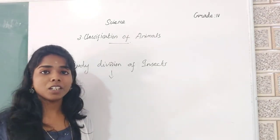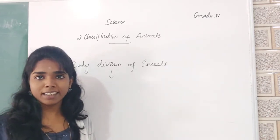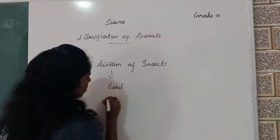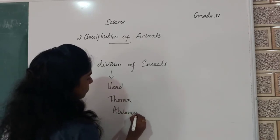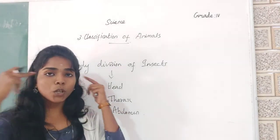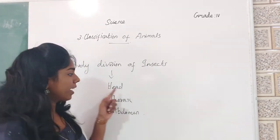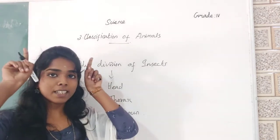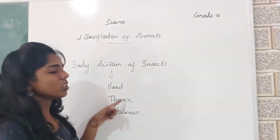The insects are divided into how many parts? Three parts. What are they? Head, thorax, and abdomen. In the head region, the insects have a pair of eyes, a pair of antennae, and a mouth. The second region is known as thorax.